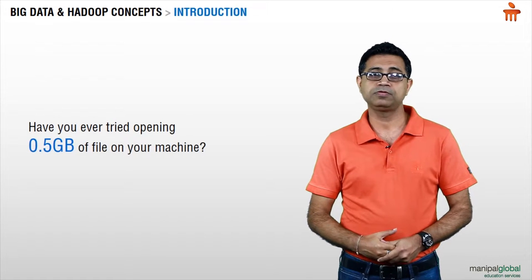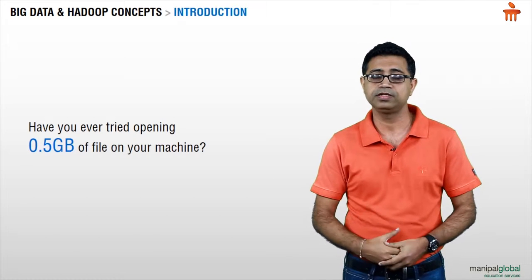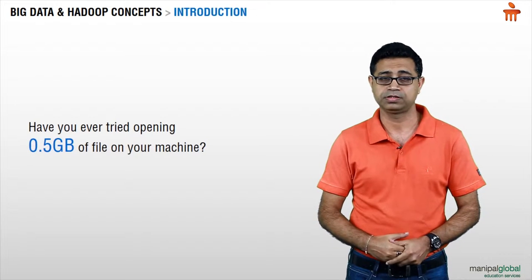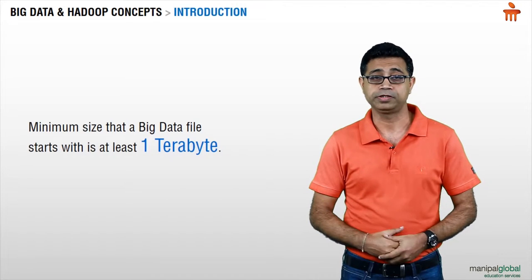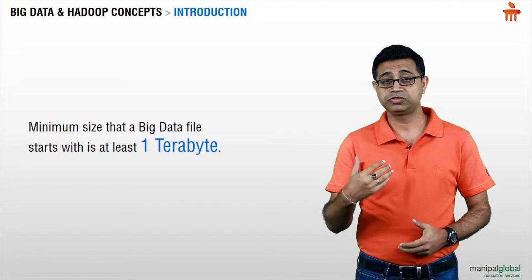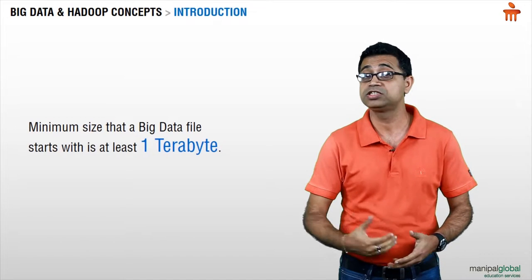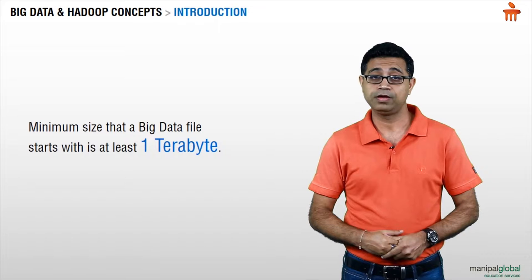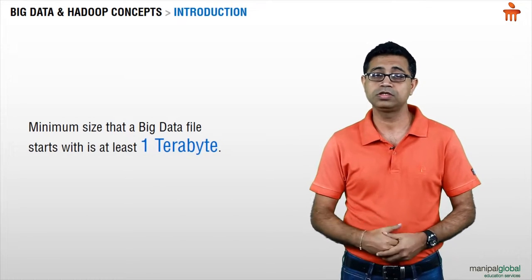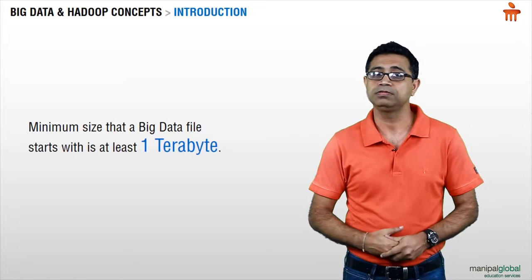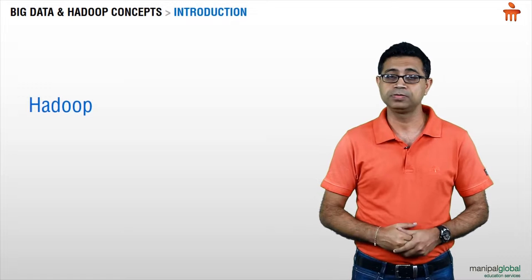Half a GB is a minuscule amount compared to the actual size of files you're going to come across in big data. The minimum size that a big data file starts with is at least one terabyte. Imagine if you try to open that on your machine — how much time it's going to take, how many challenges you'll face in opening it, let alone doing analysis, searches, or just plain accessing it. That's where technology like Hadoop comes into the picture.